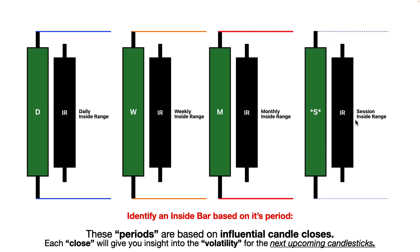An influential candle close would be a daily, weekly, or monthly candle close, and also a session or kill zone close — so this could be a London inside range, Asian inside range, New York inside range. If we have a monthly candle close inside the previous range, we have a monthly inside range high and low. If a daily candle closes within the previous range high and low, we have a daily inside range.